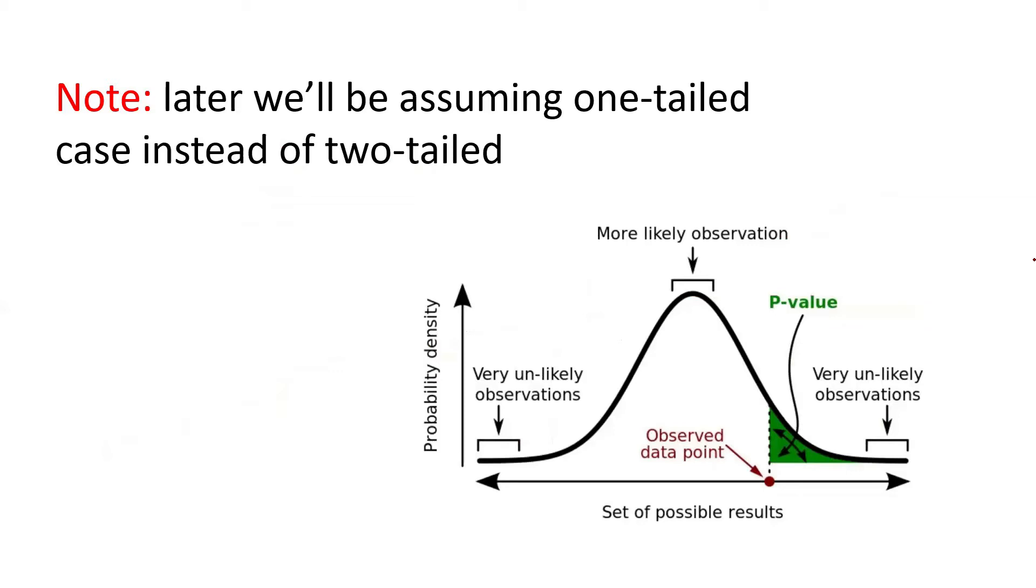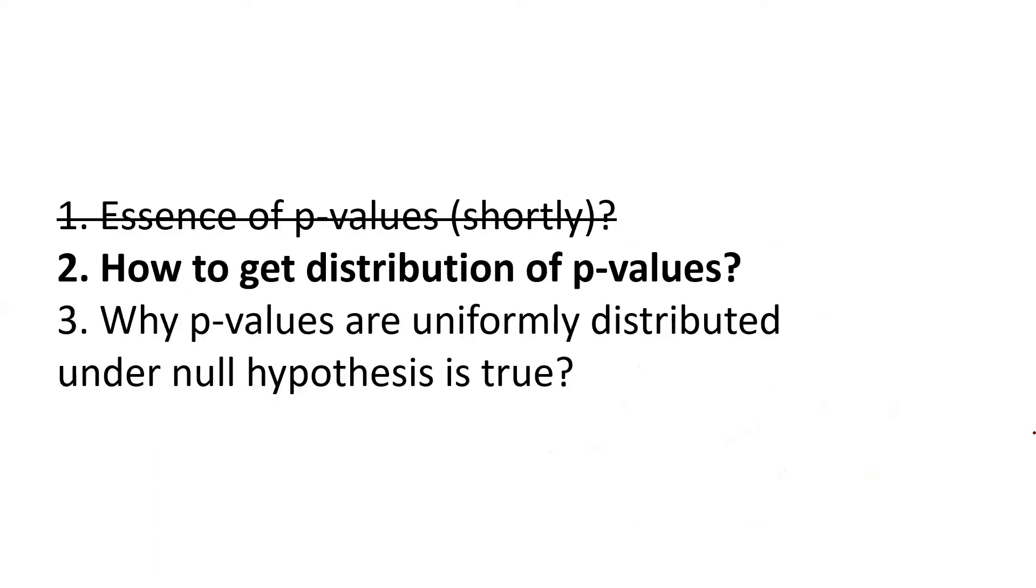So p-value would just simply tell us how likely it is that we would be shocked as much as we are now shocked or even more. But later in our discussions, I suggest to talk about one-tailed case instead of two-tailed. So previously on this example, we were talking to you also about this part, but now I don't want to take it into consideration because it is just enough to talk about one part and the second one would just only make our computation more complicated. But here we would be just answering the question like what is the probability to encounter as extremely high, but not just as extreme. Okay, so these were the main essence of p-values.